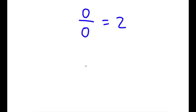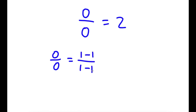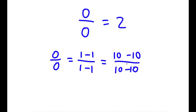I'm going to be proving that 0 divided by 0 is equal to 2. To do this, I'll start with 0 divided by 0, which is the same as 1 minus 1 over 1 minus 1, since 1 minus 1 is 0. Then 1 minus 1 over 1 minus 1 is the same as 10 minus 10 over 10 minus 10, since 10 minus 10 is also 0.